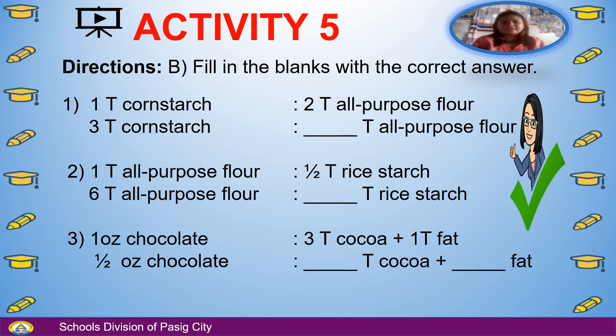Fill in the blanks with the correct answer. Number 1: 1 tablespoon of cornstarch equals 2 tablespoons of all-purpose flour; so 3 tablespoons of cornstarch equals blank tablespoons of all-purpose flour.